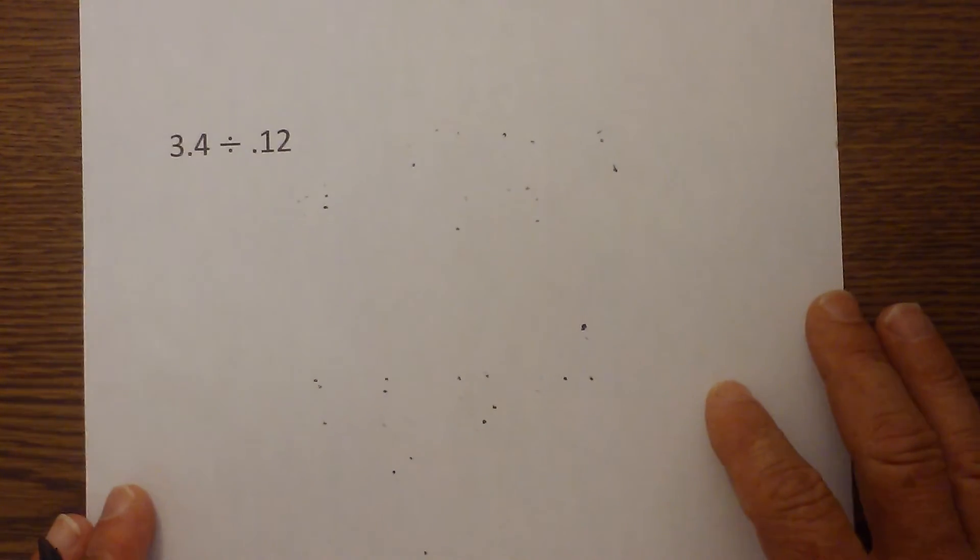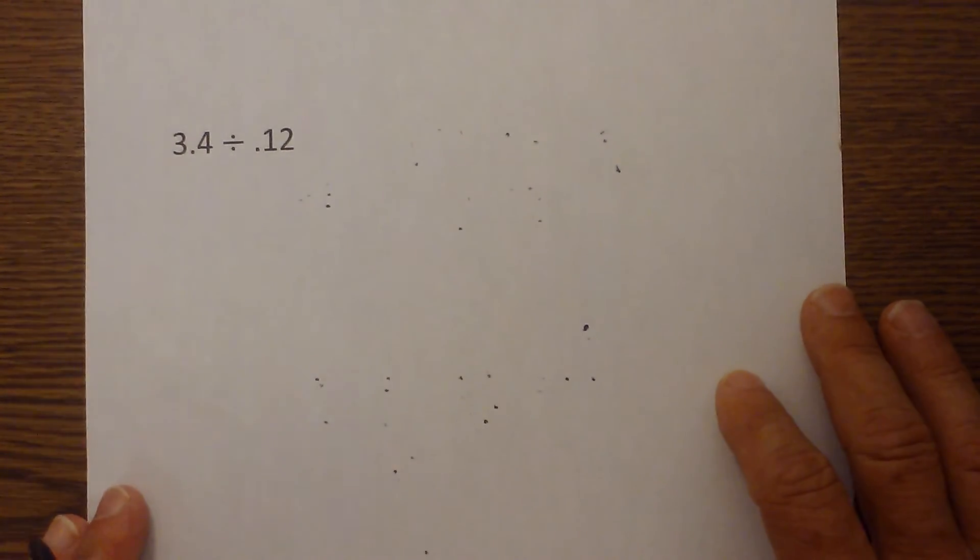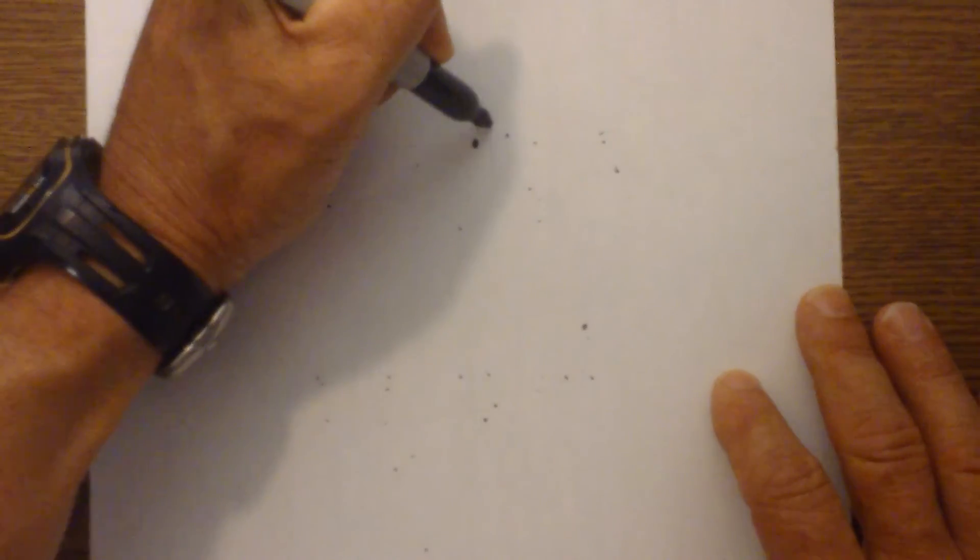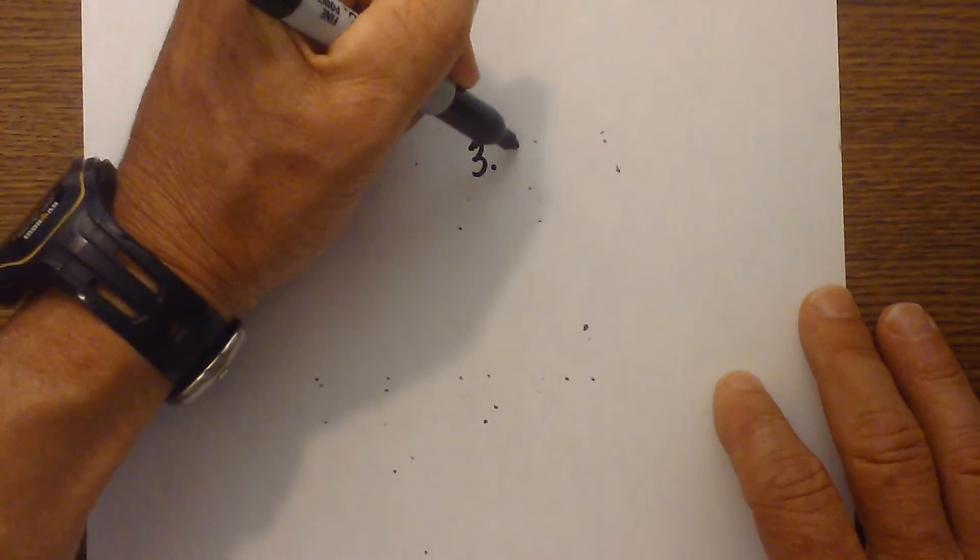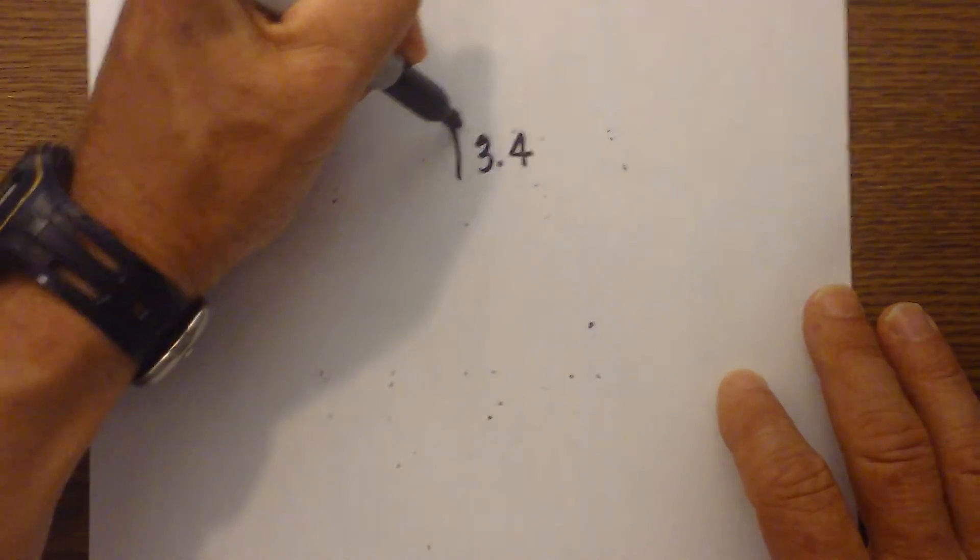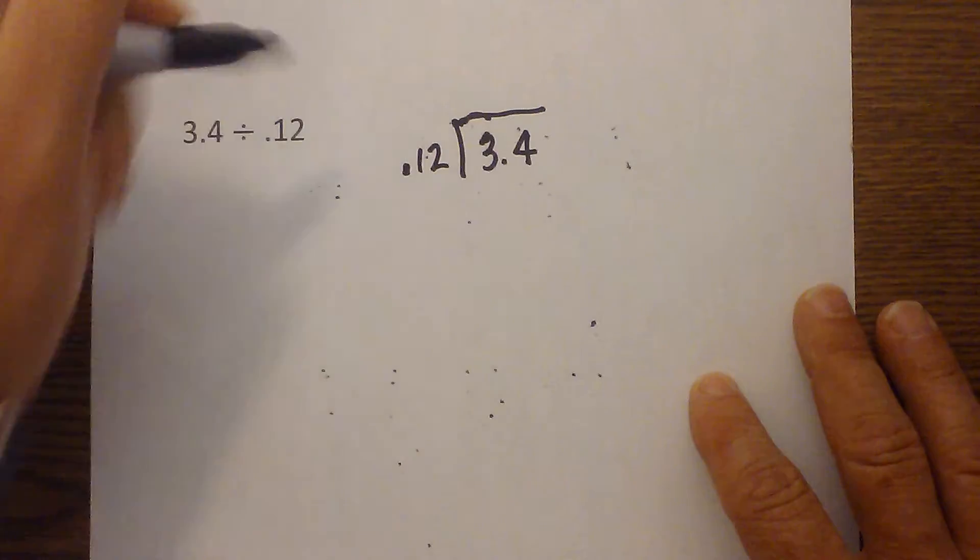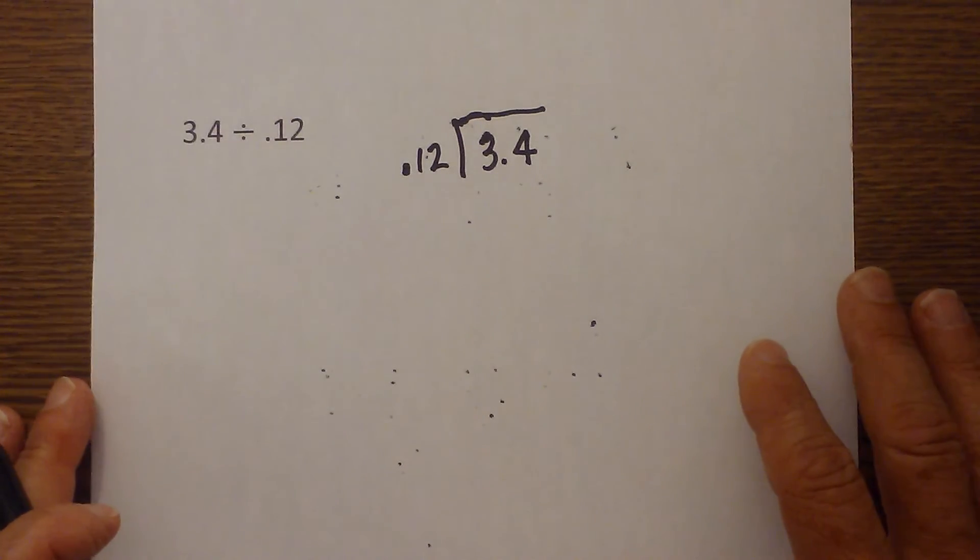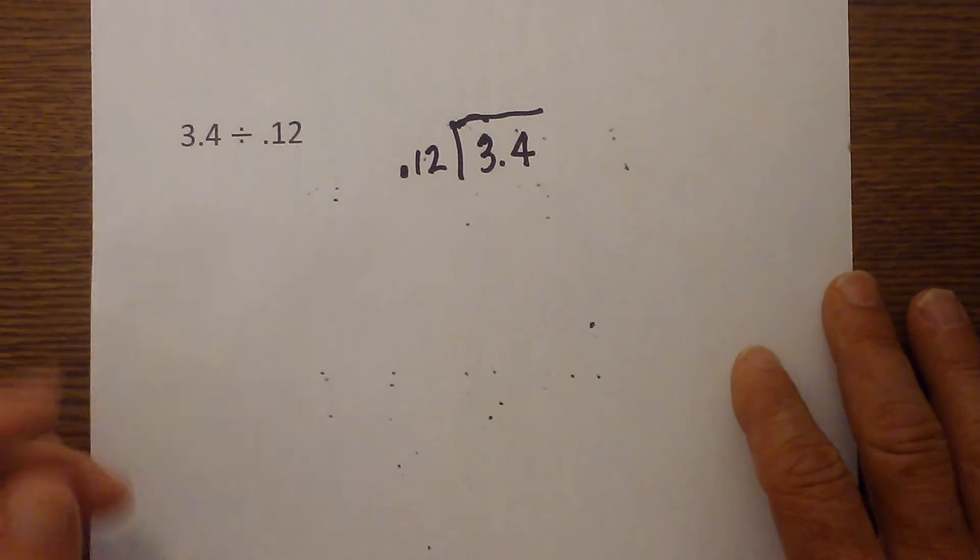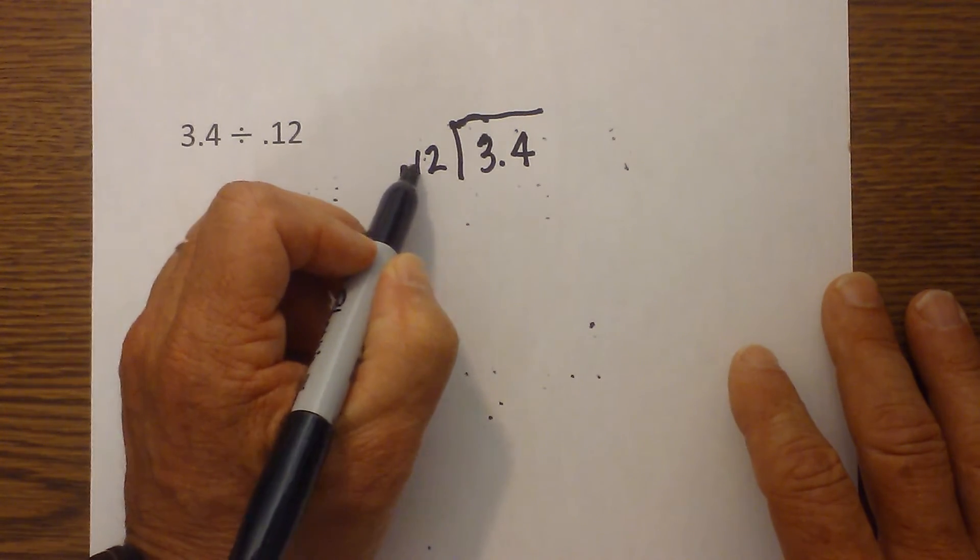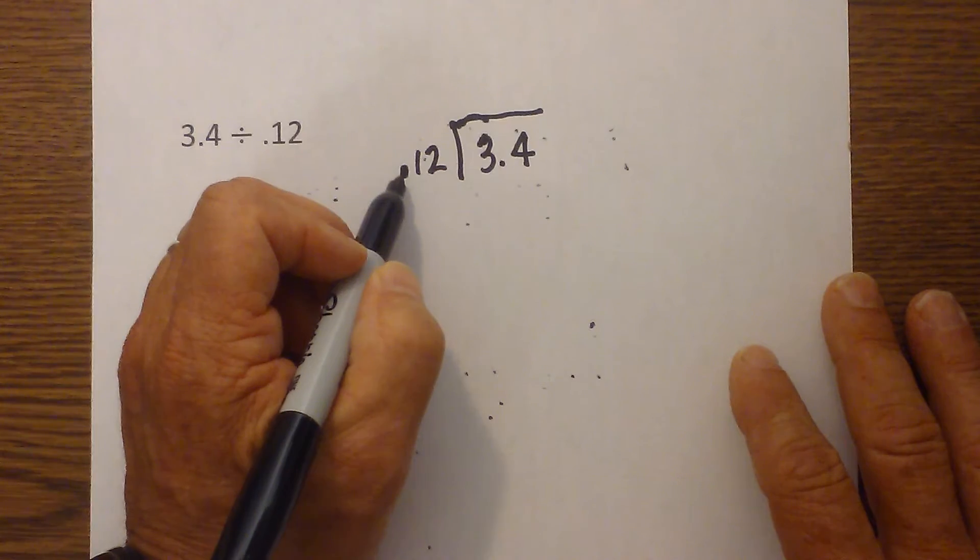And finally, whenever you divide decimals, let's set this up. We have 3.4 divided by 0.12. And I think it's easier when you divide decimals if you set it up in this format. You cannot have a decimal to the left of any number on the outside in the numerator.